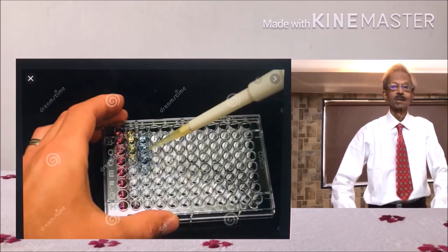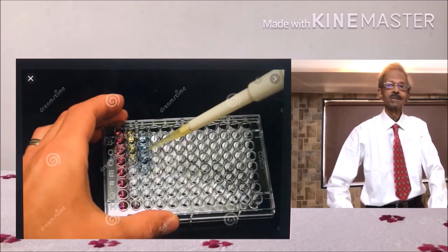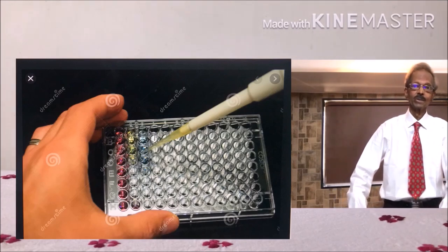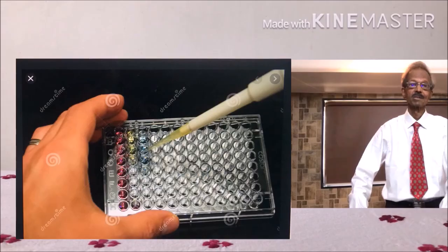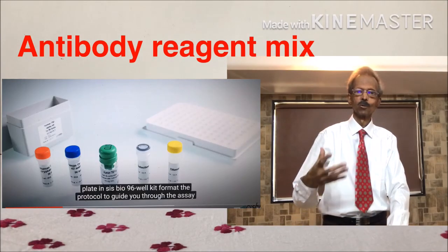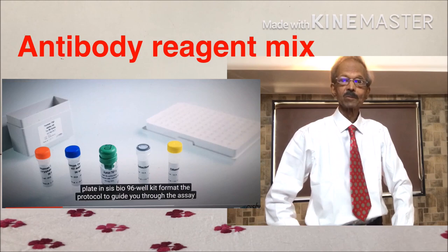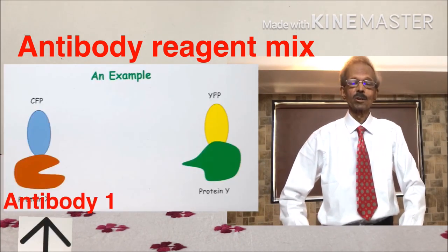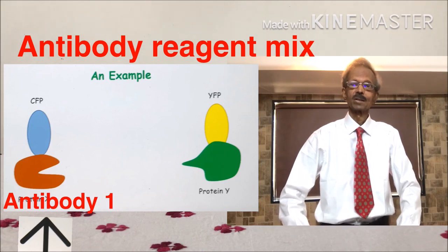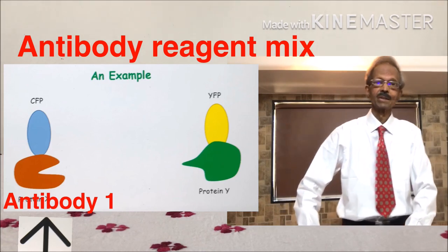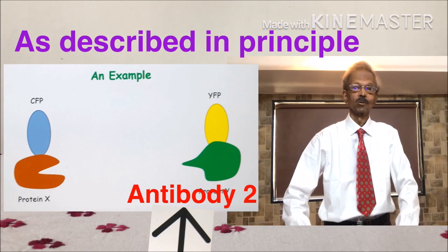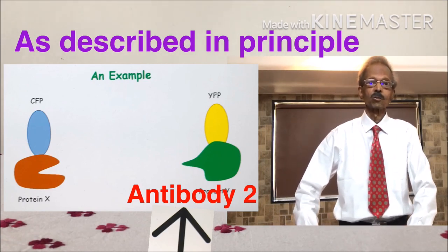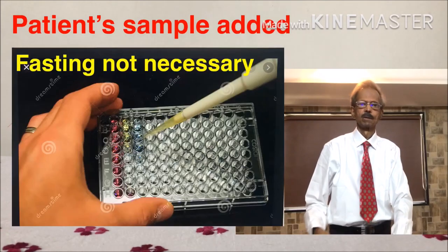Next, 16 microliters of various dilutions of the standard are added to the microplate wells. It contains the important antibody-reagent mix. It contains one antibody of the cytokine tagged with fluorophore CFP and another antibody of the cytokine tagged with fluorophore YFP.